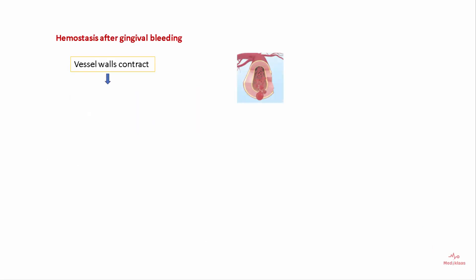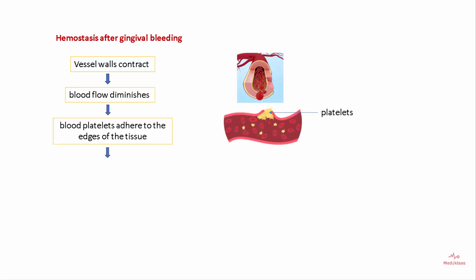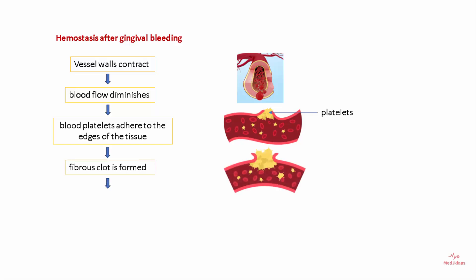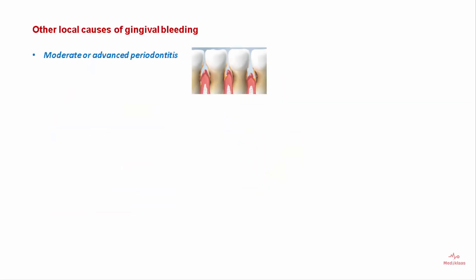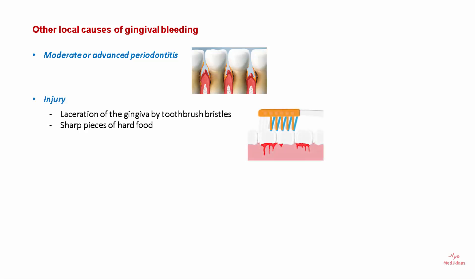After gingival bleeding occurs, the vessels try to contract, blood flow diminishes, blood platelets adhere to the edges of the tissue, a fibrous clot is formed, and contraction and approximation of the edges of the injured area occurs. This results in control of gingival bleeding.